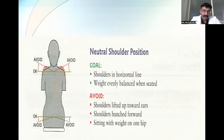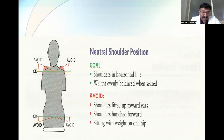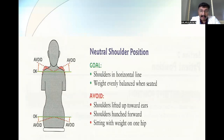The shoulder position — shoulders should be in the horizontal line. Weight should be evenly balanced when seated. Things to avoid: shoulders lifted up towards the ears, shoulders hunched forward, and sitting with the weight on the hip. These things have to be avoided.